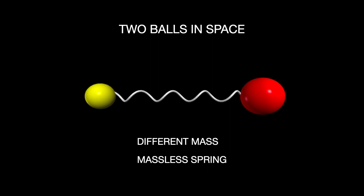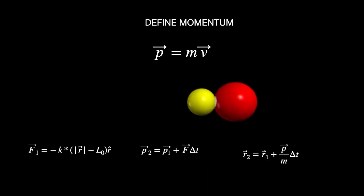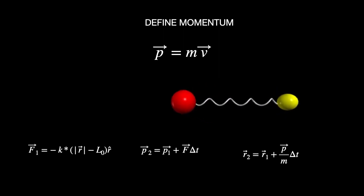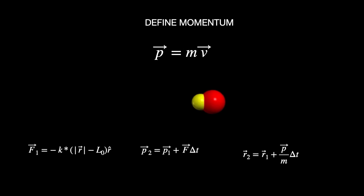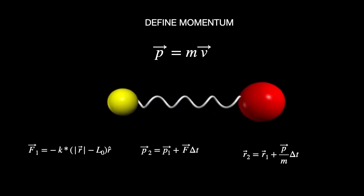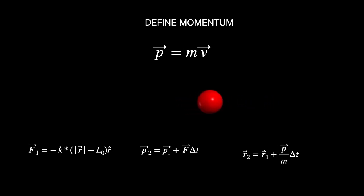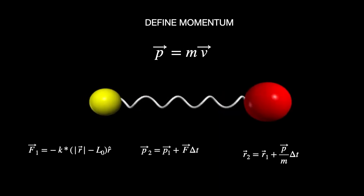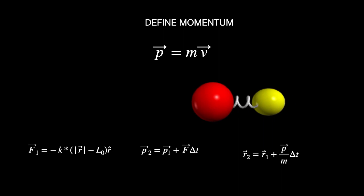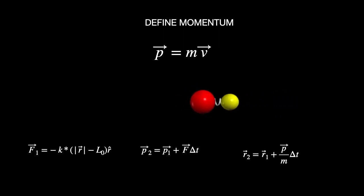Let's start with a simple example. Suppose I have two balls out in the middle of deep space so that there's nothing else around, and these two balls are connected by a spring with no mass. This is a great situation because I can completely model it — I can calculate the forces on each ball and use that to update the momentum. The force on each ball is based on the position of the spring, and the change in momentum is related to that force. They have the same but opposite forces. After finding the change in momentum, I can use that to update the position and repeat the whole thing, which is the idea of a numerical calculation.